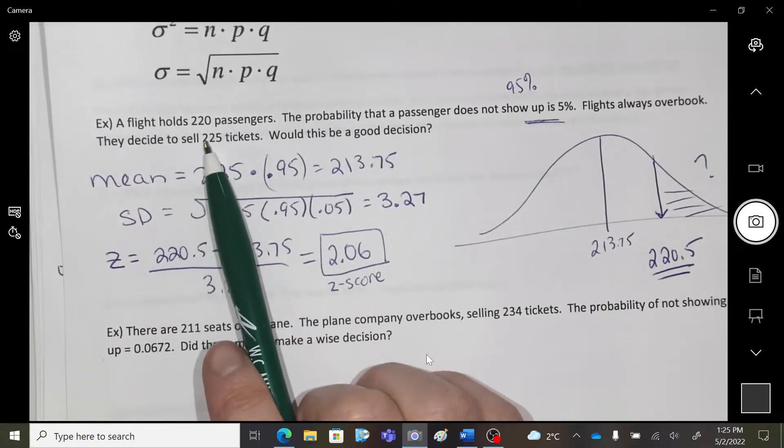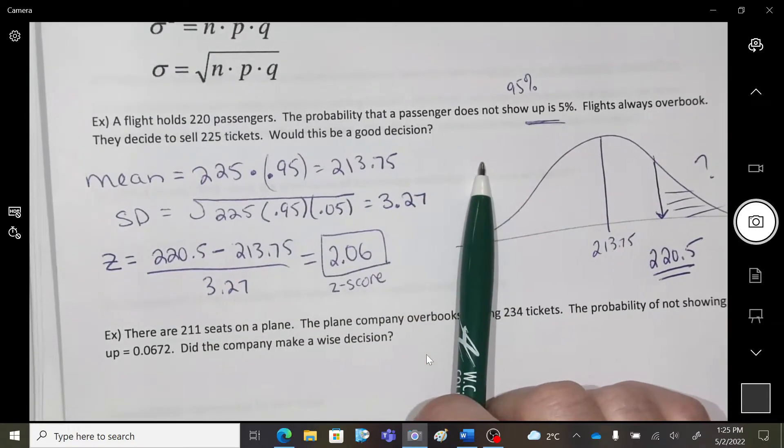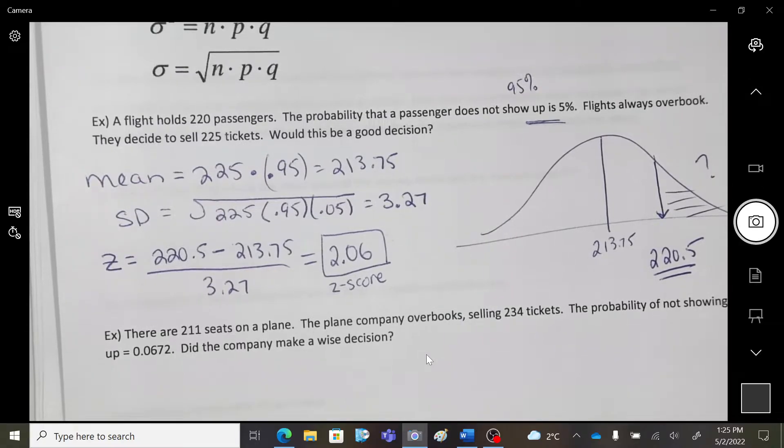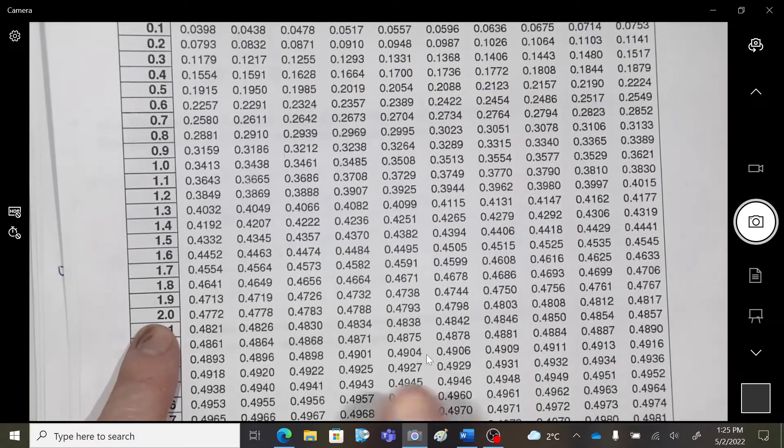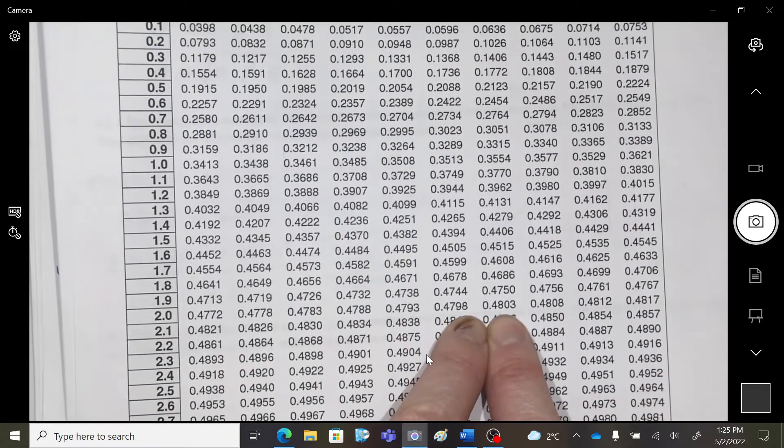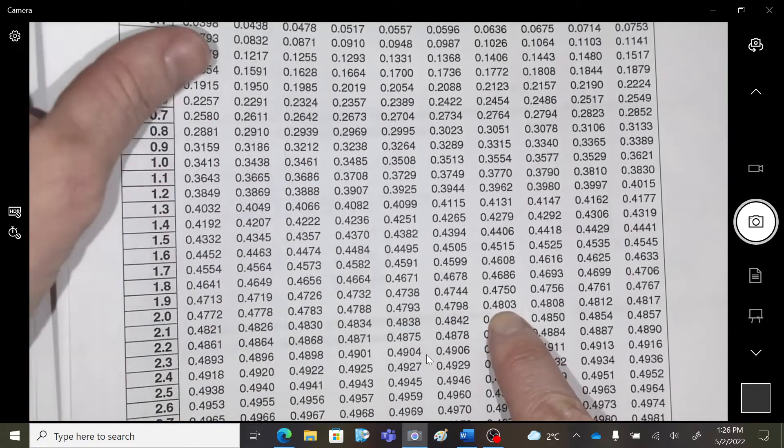Because my flight was 220, and then we talked about overbooking your flight. So, to overbook, I'm worried about being above 220. That makes my flight get overbooked. So, I'm going to go to that chart, 2.06 Z score. I'm going to do the lookup. So, 2.06. And I'm getting 0.4803.